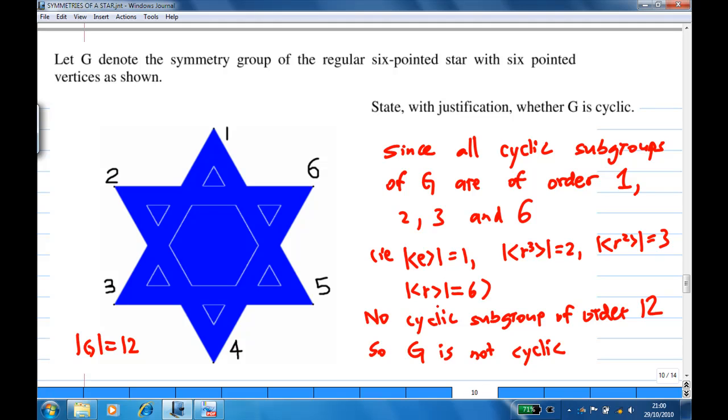Now, there is no cyclic subgroup of order 12, and G has order 12. So, G is not cyclic.